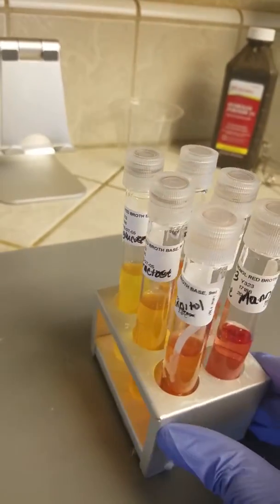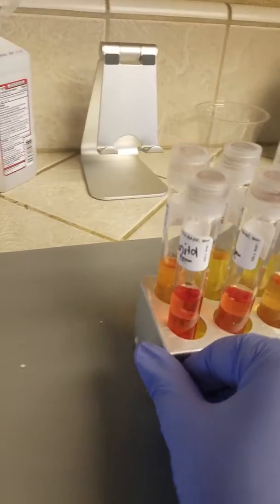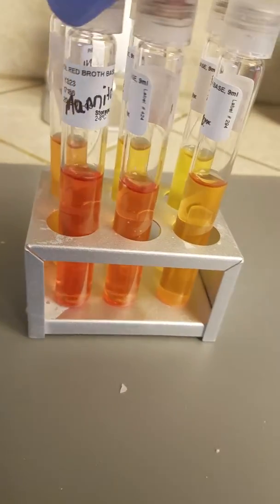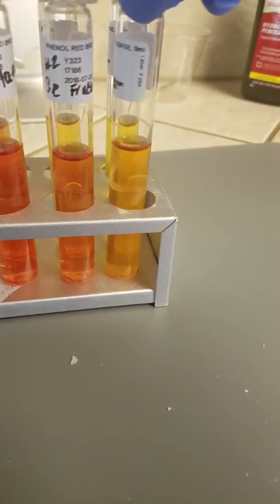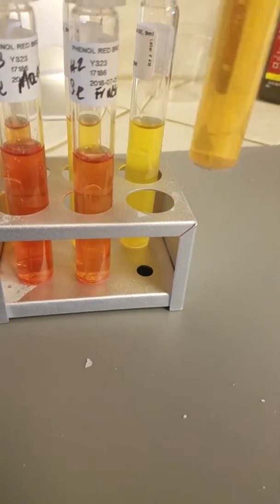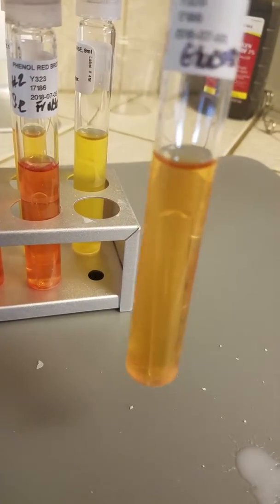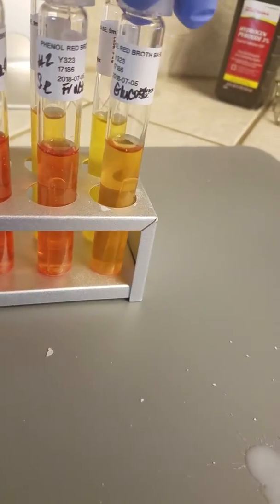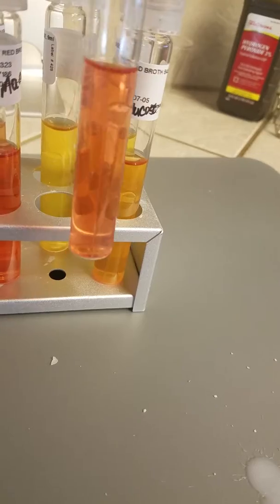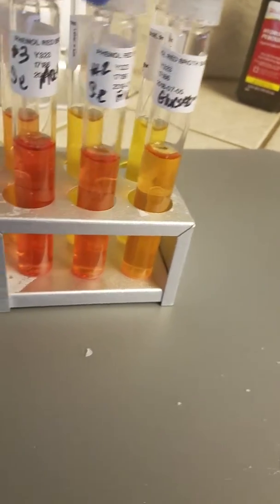And back here is my staph collection. Now as you can see, the glucose here is more of a yellow than the other two here.